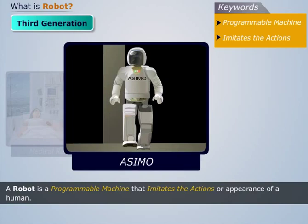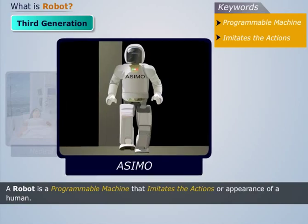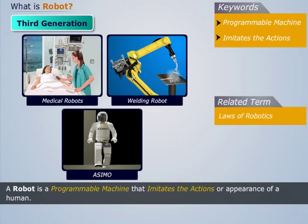One of the best examples of third generation robots is ASIMO.